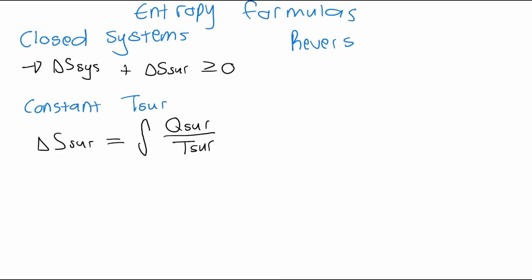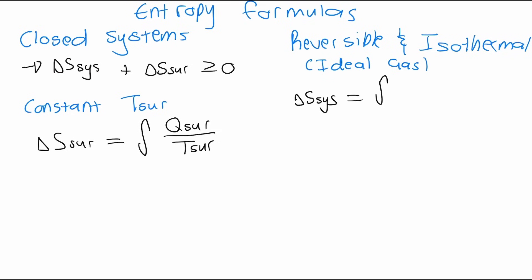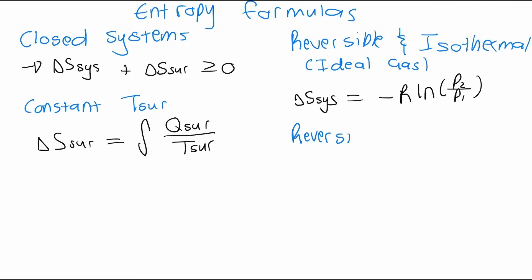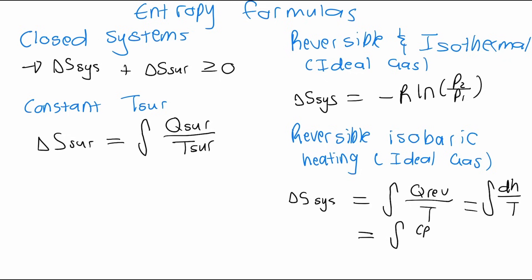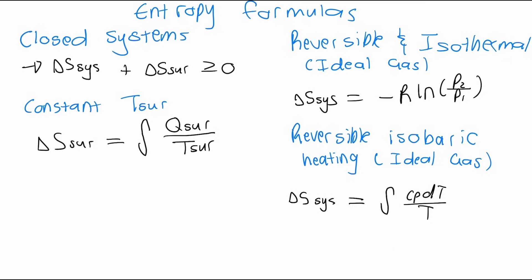Let's look at formulas for specific scenarios. For a reversible isothermal expansion of an ideal gas, you can use this formula to calculate the entropy of the system. And for a reversible isobaric heating of an ideal gas, you can use this formula. Let me know in the comments if you want me to derive any of these formulas or have any questions about them.